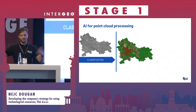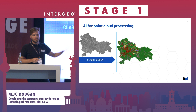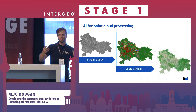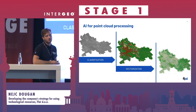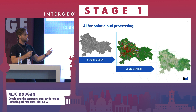For some use cases, classification is already the end delivery, but a lot of times we want to extract some additional insight out of the data. Therefore we do some sort of vectorization — for example to detect single trees, calculate how much area is covered by tree canopy, or to do railway inspection or inventory generation.